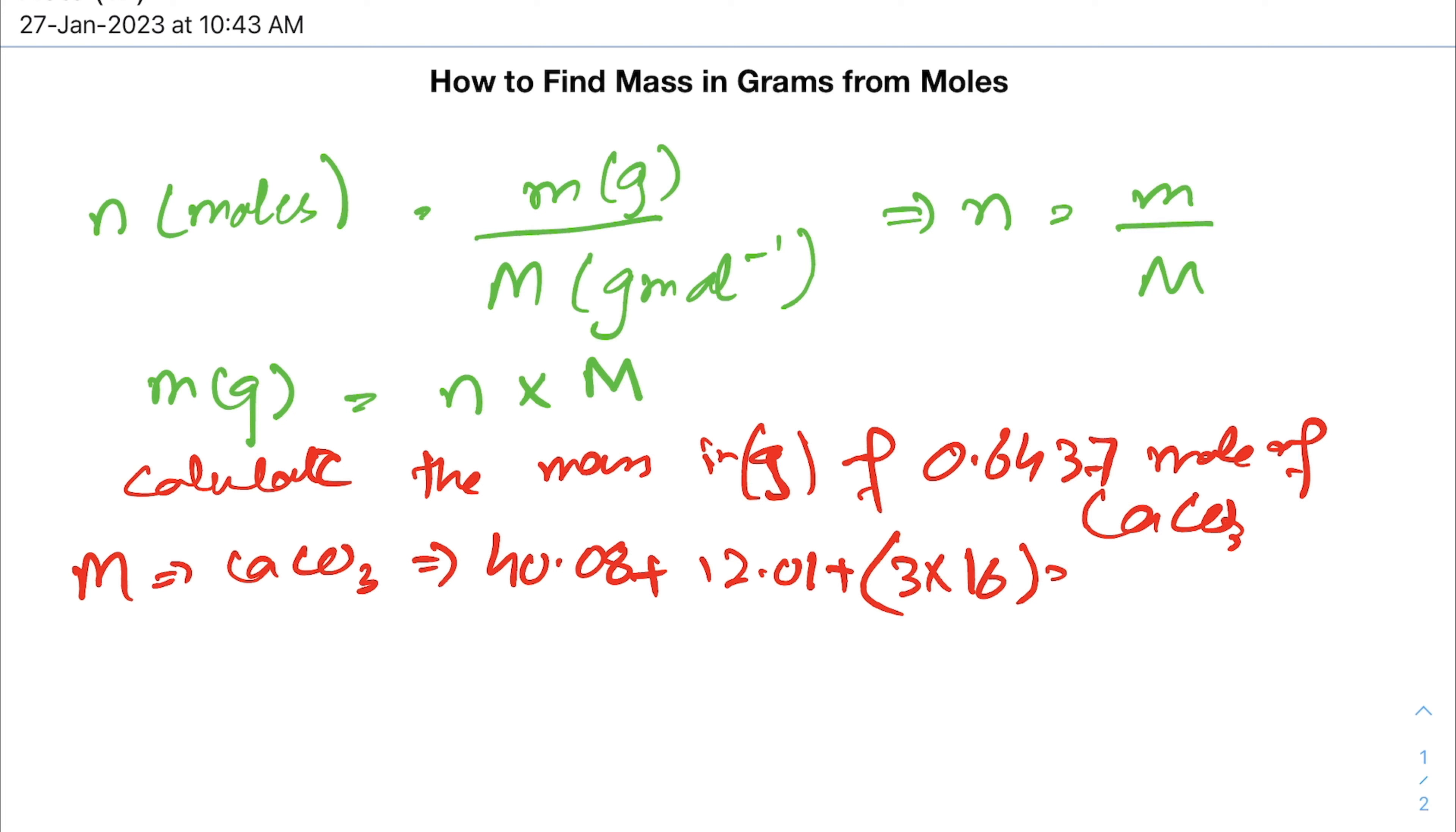The total molecular mass of calcium carbonate is equals to 100.09 grams per mole.